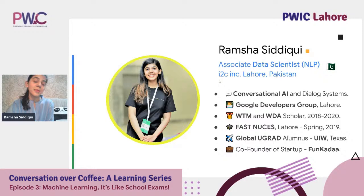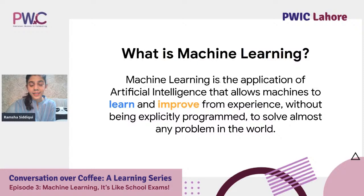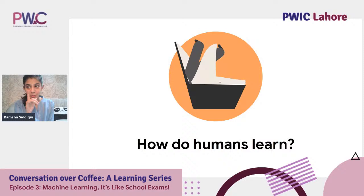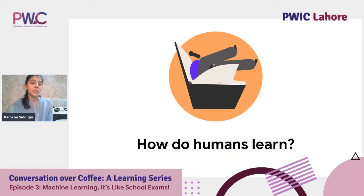A lot of people think machine learning and artificial intelligence are the same thing. Machine learning is specifically an application of artificial intelligence that allows machines to learn and improve from experience — their experience being data — without being explicitly programmed, as you would in a general rule-based system. It's been known to solve almost any problem in the world. To understand how machines learn, we should first look at how humans learn.